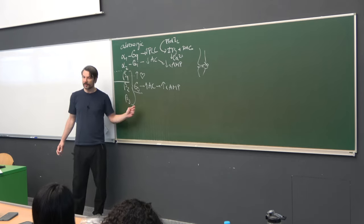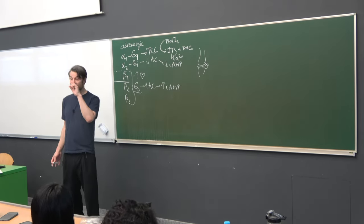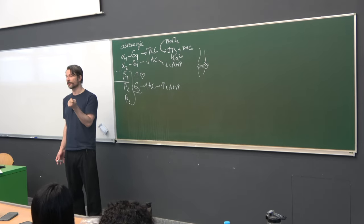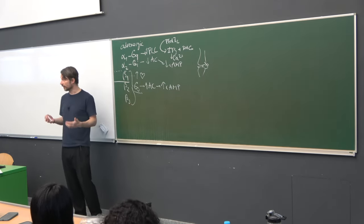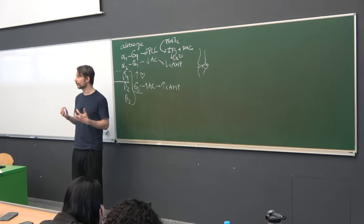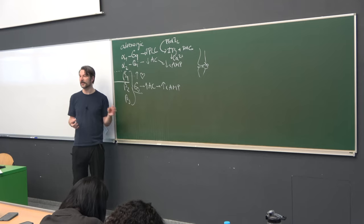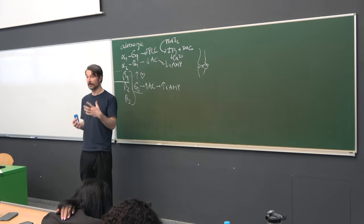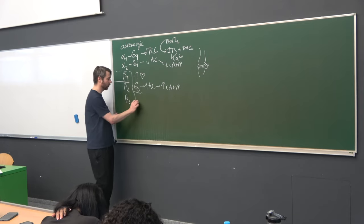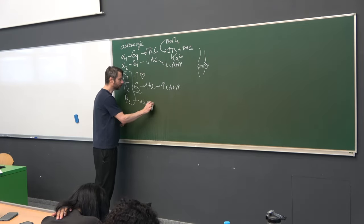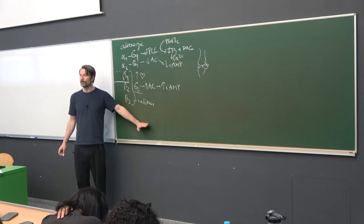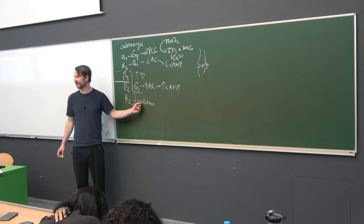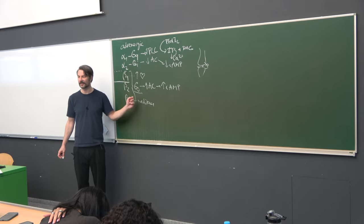The beta-3 receptor is found primarily on adipose tissue and is responsible for starting lipolysis. In a stress reaction where you need to start running, the body wants to mobilize fatty acids so that muscles have enough energy. Beta-3 receptors mediate this lipolysis caused by catecholamines. The hormone-sensitive lipase — that's what makes it hormone-sensitive — is activated by the increase in cAMP through this pathway.